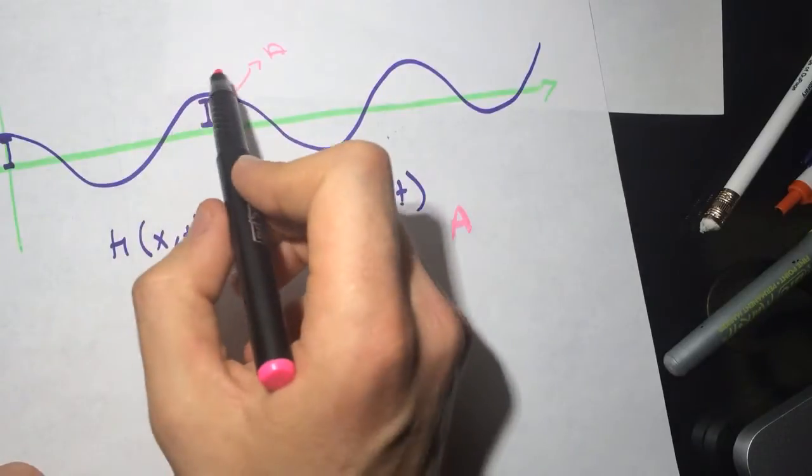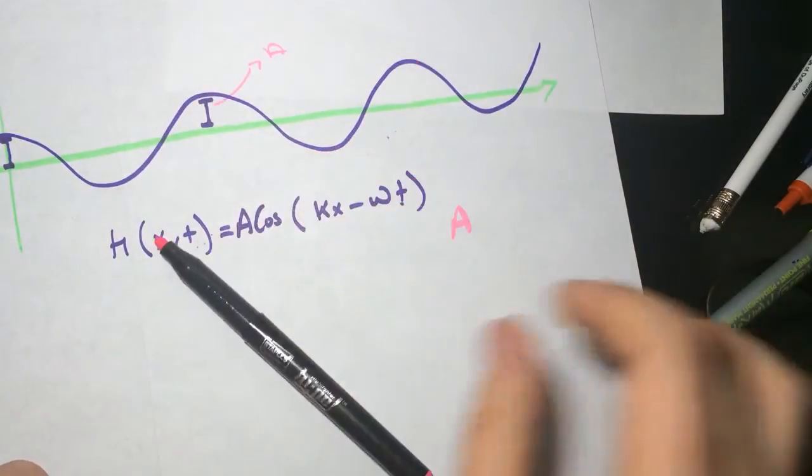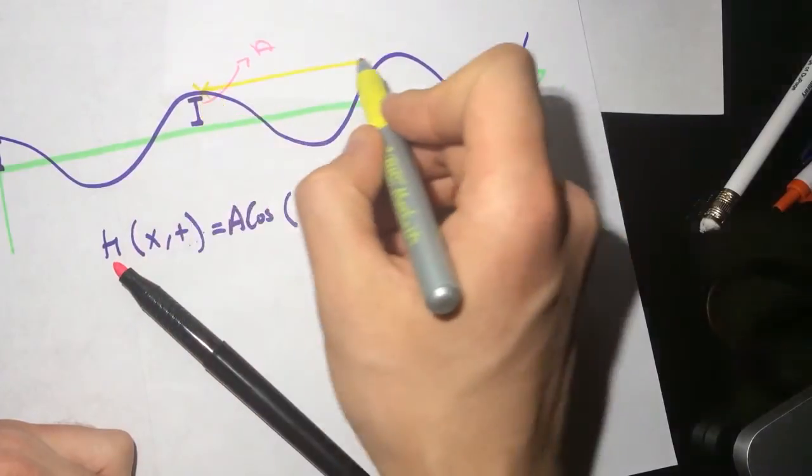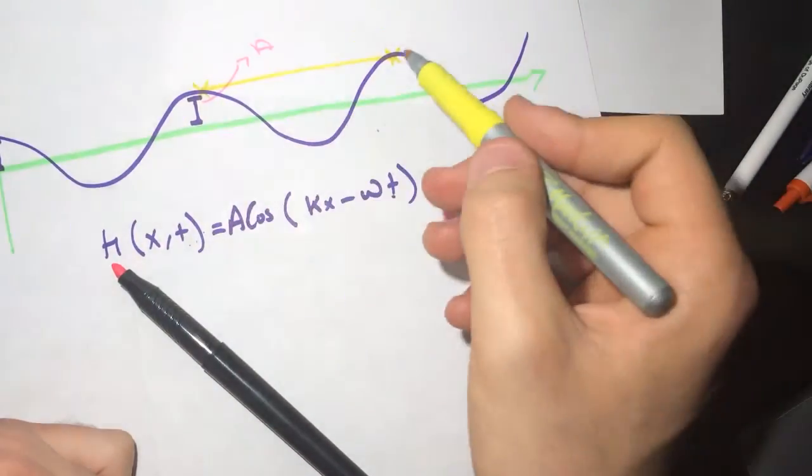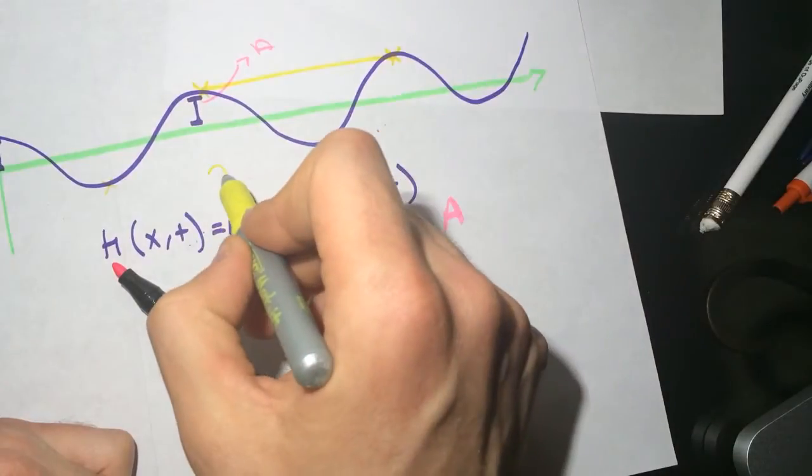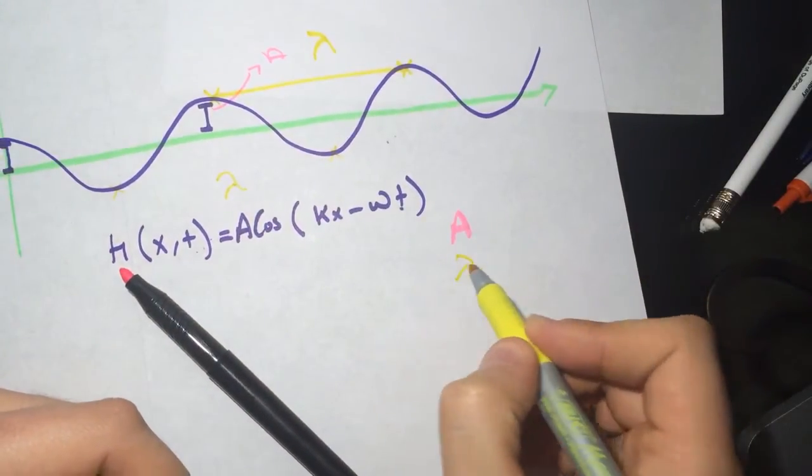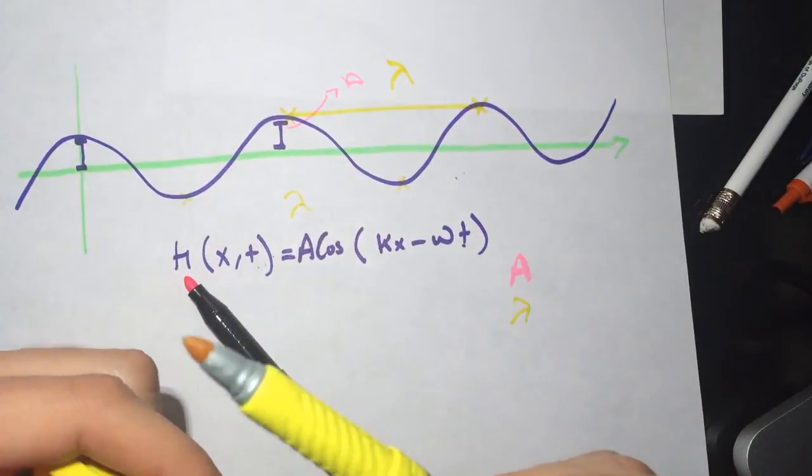And we have lambda. Lambda is the distance from this point to this point, between the highest point or between the lowest points. This is lambda. This is lambda here. This guy is lambda.